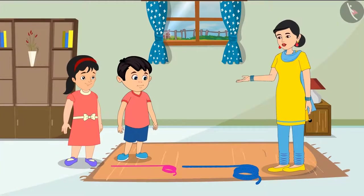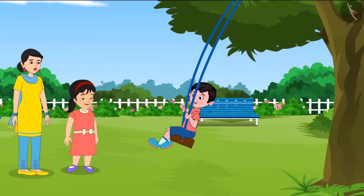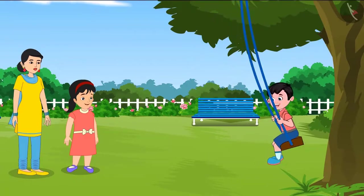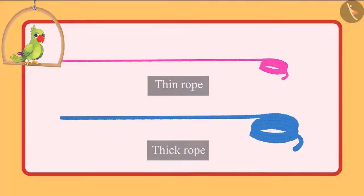Come on, let me help you to hang this swing. After hanging the swing, Chotu and Pinky swung a lot and had fun. So children, you saw Chotu and Pinky chose the thick rope instead of the thin rope to hang a swing.